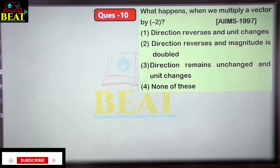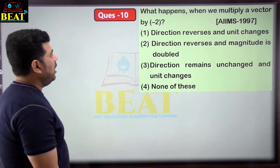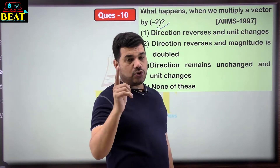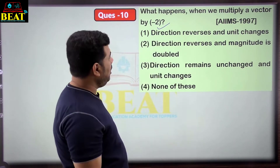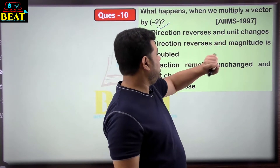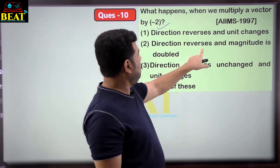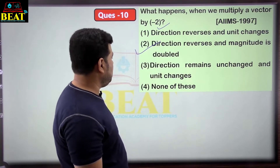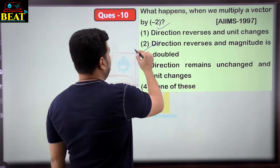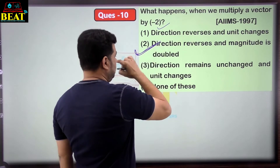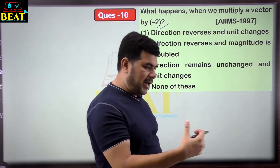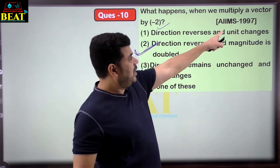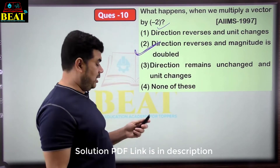Question 10: what happens when we multiply a vector by minus 2? Direction reverses because of the minus sign, and magnitude doubles because of factor 2. Unit does not change. So direction reverses and magnitude is doubled. Direction remaining unchanged is wrong; unit changes is wrong. This was an AIMS question.